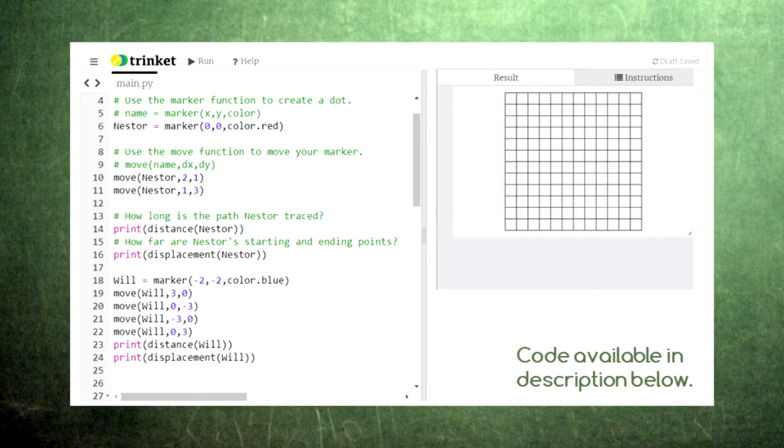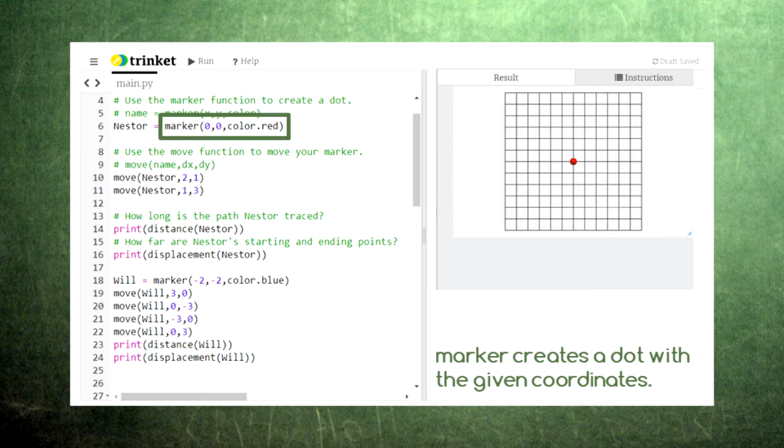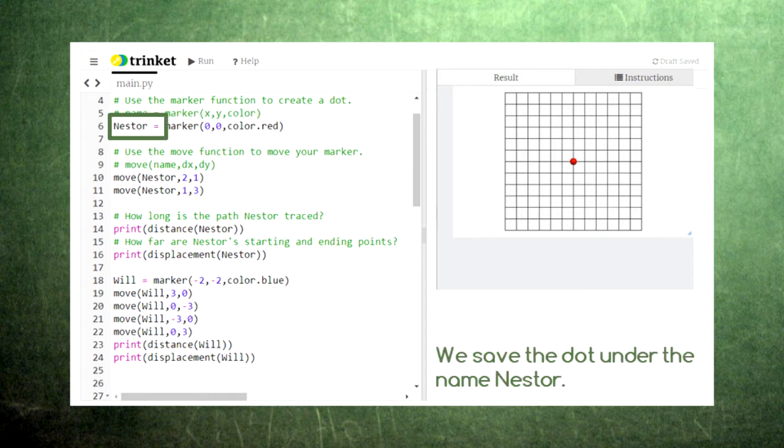This code creates a dot on the grid to the right, and then moves it according to your directions. First, we use a function called marker to create the dot. We get to specify the x and y coordinates of the dot, and what color the dot will be. Notice that we also give the dot a name, in this case nestor, so that we can refer to it later.